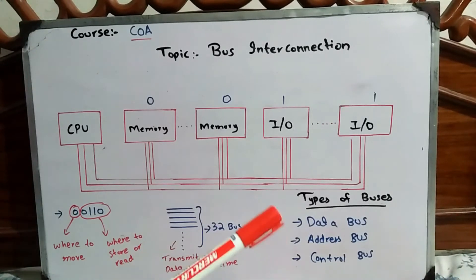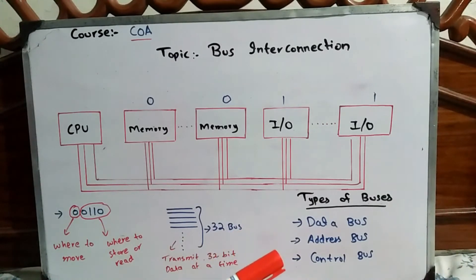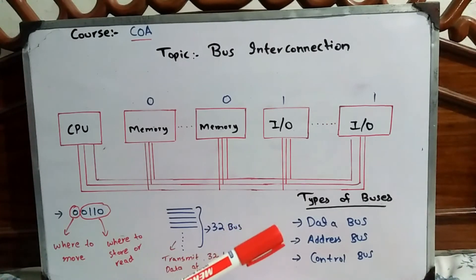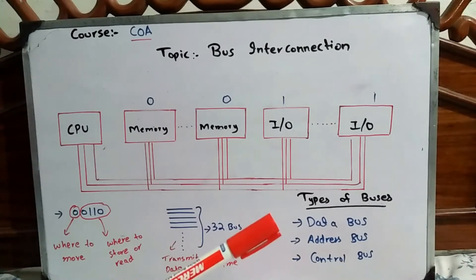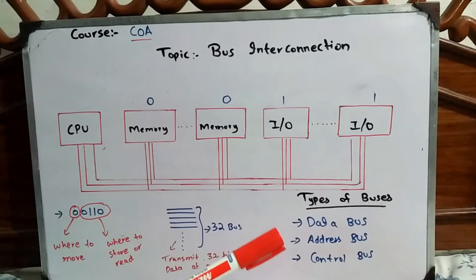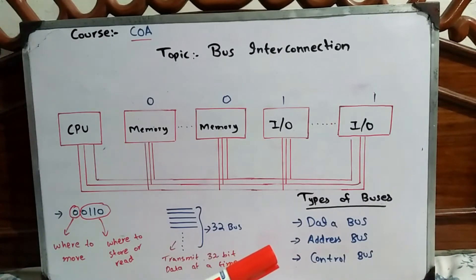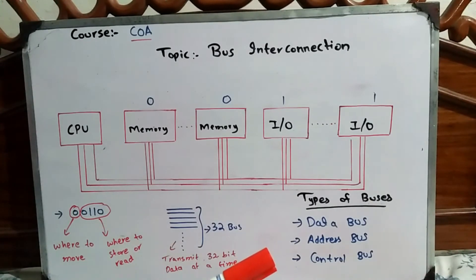We will now discuss the types of buses. There are three types of buses: data bus, address bus, and control bus. The data bus carries the data which you want to read or write. The third bus is the control bus, and a number of functionalities are performed by the control bus.